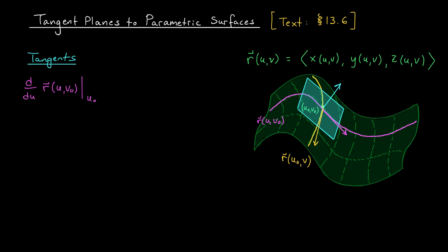I can bring the derivative inside and differentiate each component separately. This gives me dx by du, dy by du, dz by du, and I evaluate the whole thing at u0 v0. That's this tangent vector you see here, which maybe we'll call r u.